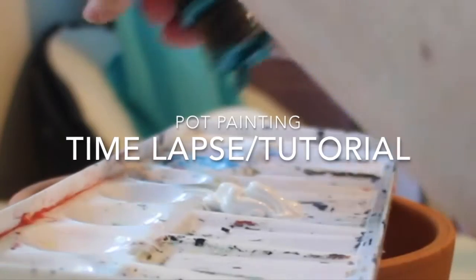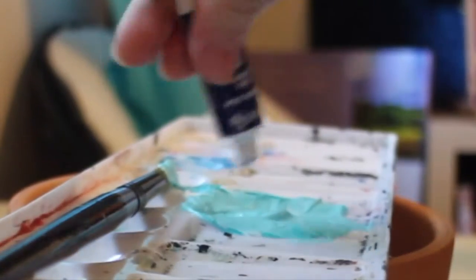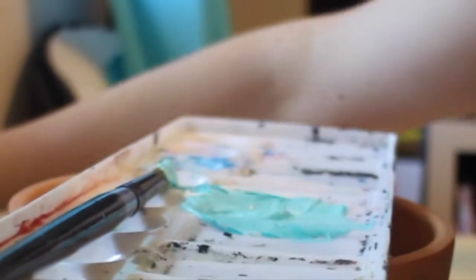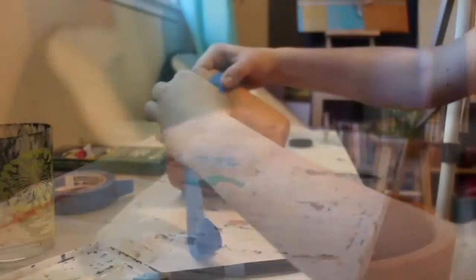Hey guys, welcome back to my channel. In this video time-lapse and tutorial, I'm going to show you how I painted a planting pot for my dad's birthday. I started off with taping around the pot's border so the paint doesn't get on it and I get a clean cut.